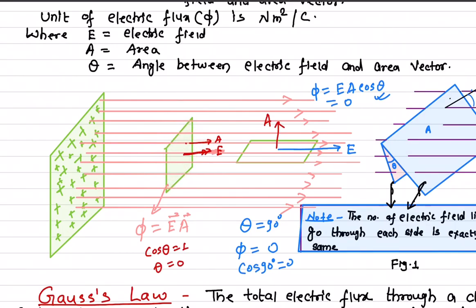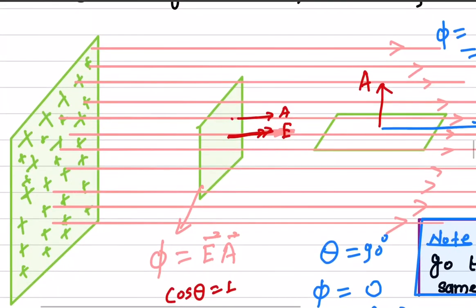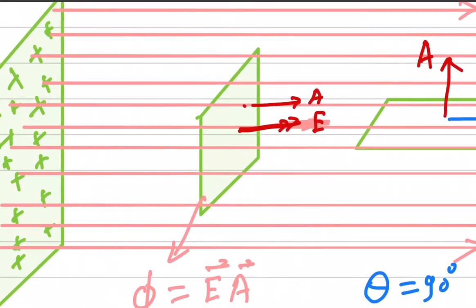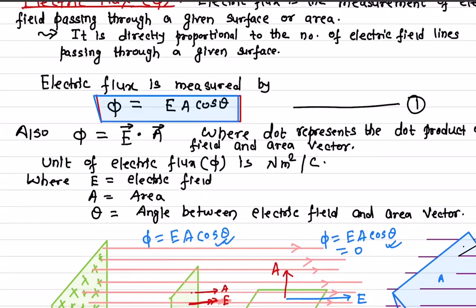At each point, the electric field and area are parallel to each other — that's how you calculate the electric flux for each surface. Now, if the area makes an angle in between 0 and 90 degrees, the way you calculate is: flux equals E times A times cosine theta. You calculate the electric field, the area, and whatever angle is given, just multiply — that's how you calculate the electric flux.